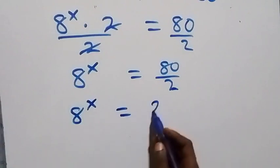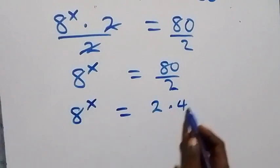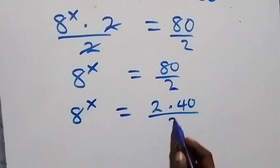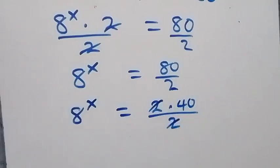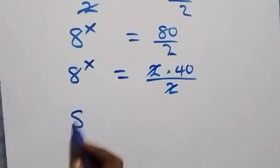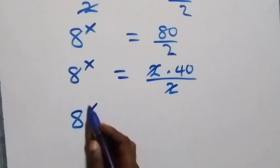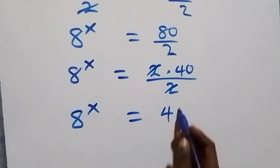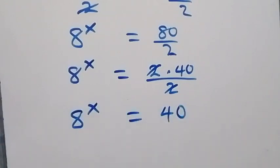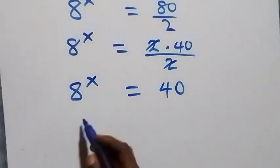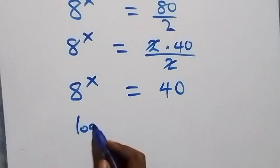We can write this as 8 raised to power x equals 2 times 40 over 2; the twos cancel, and we have 8 raised to power x equals 40. From here we can take the log on both sides.